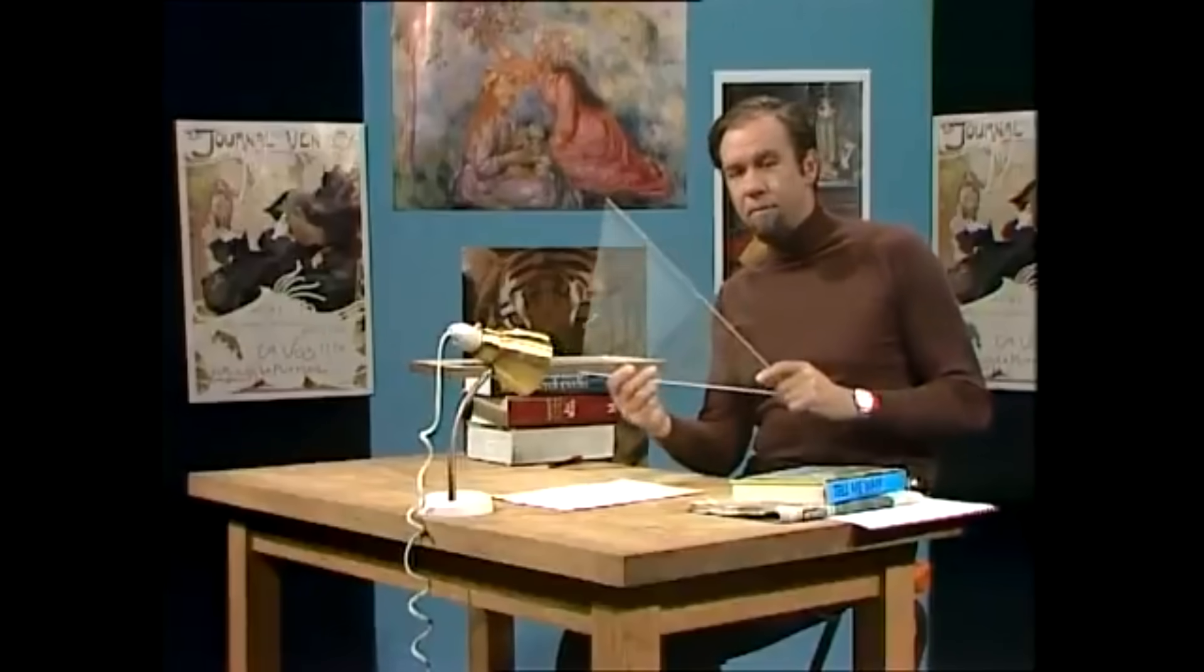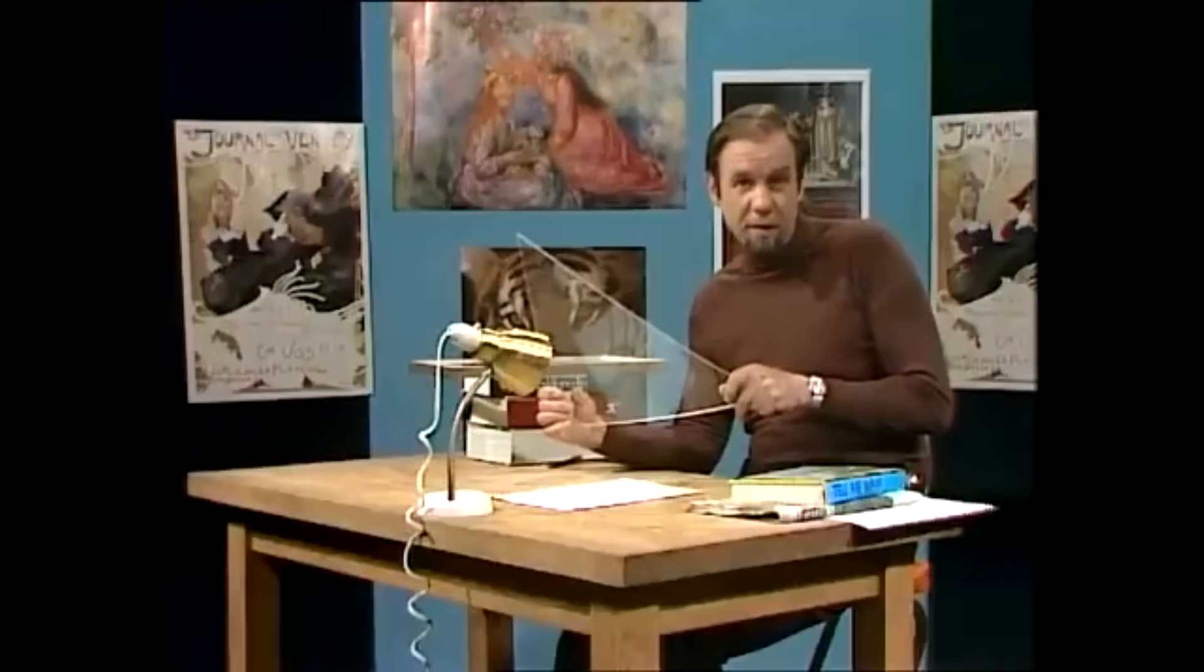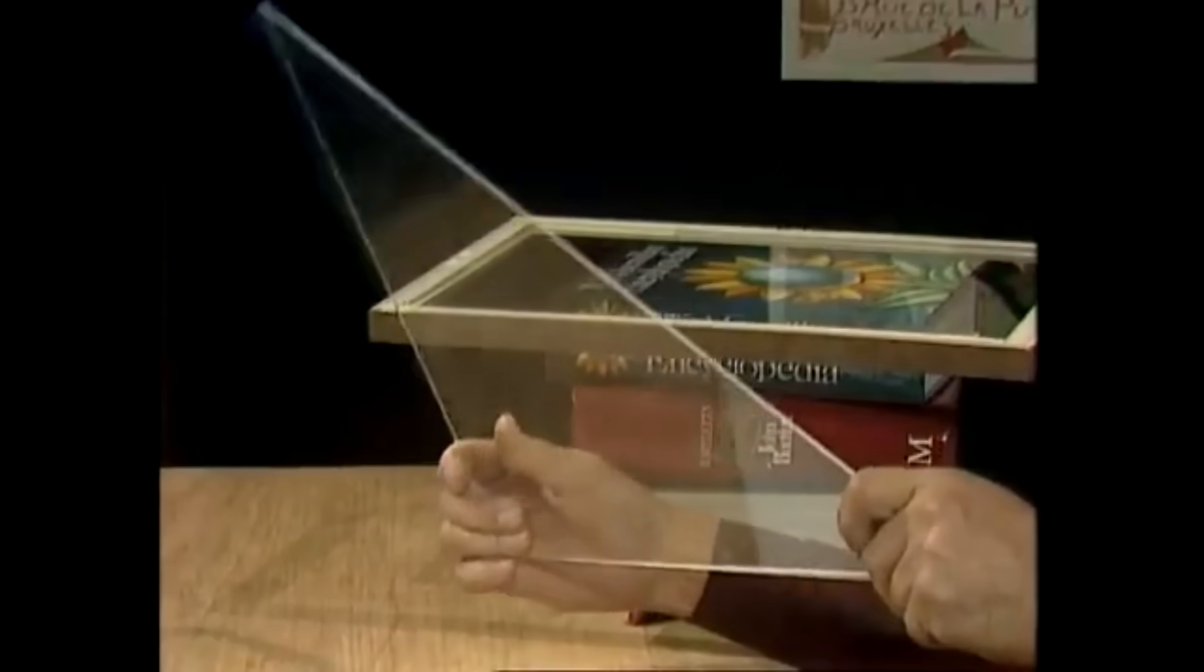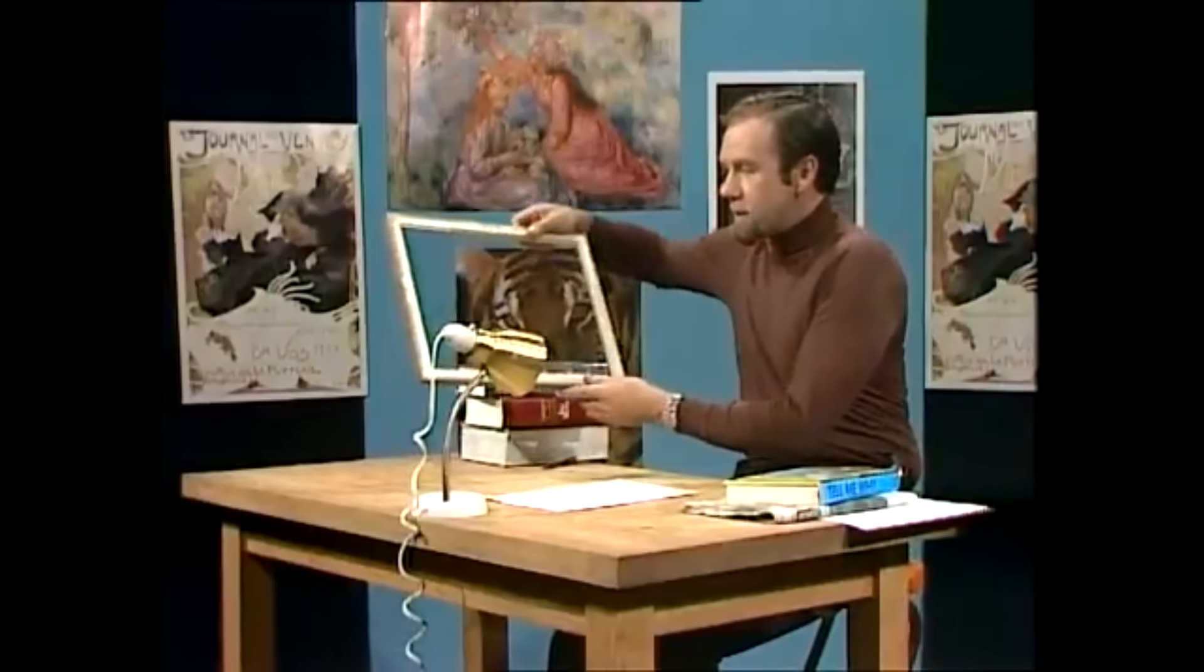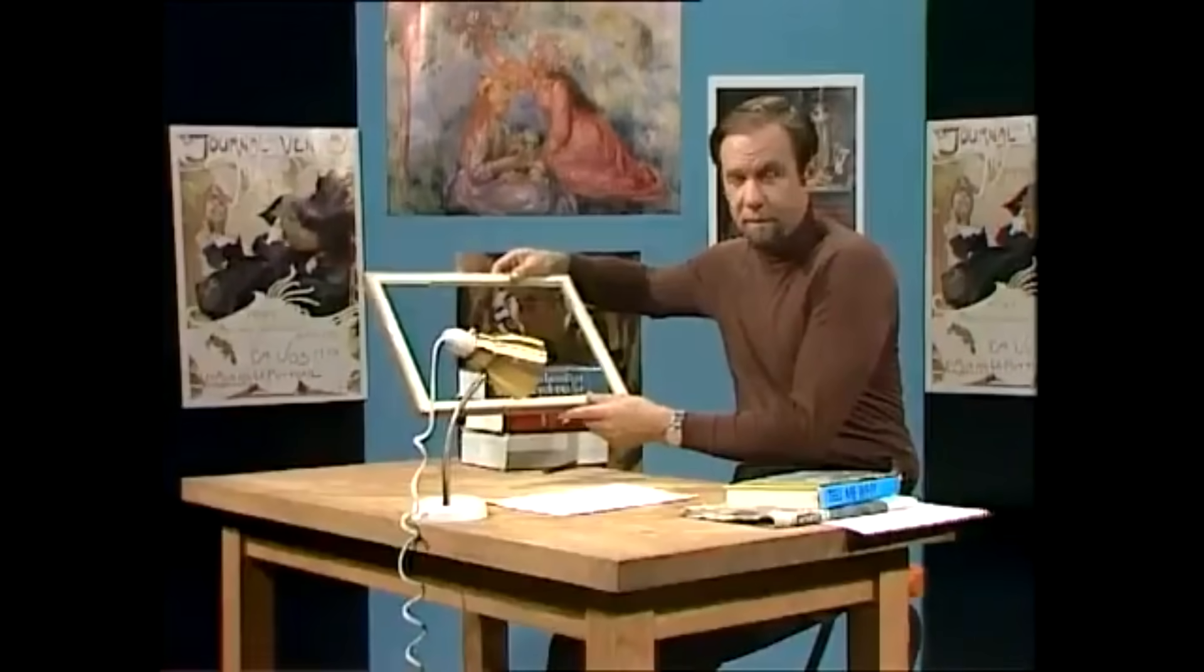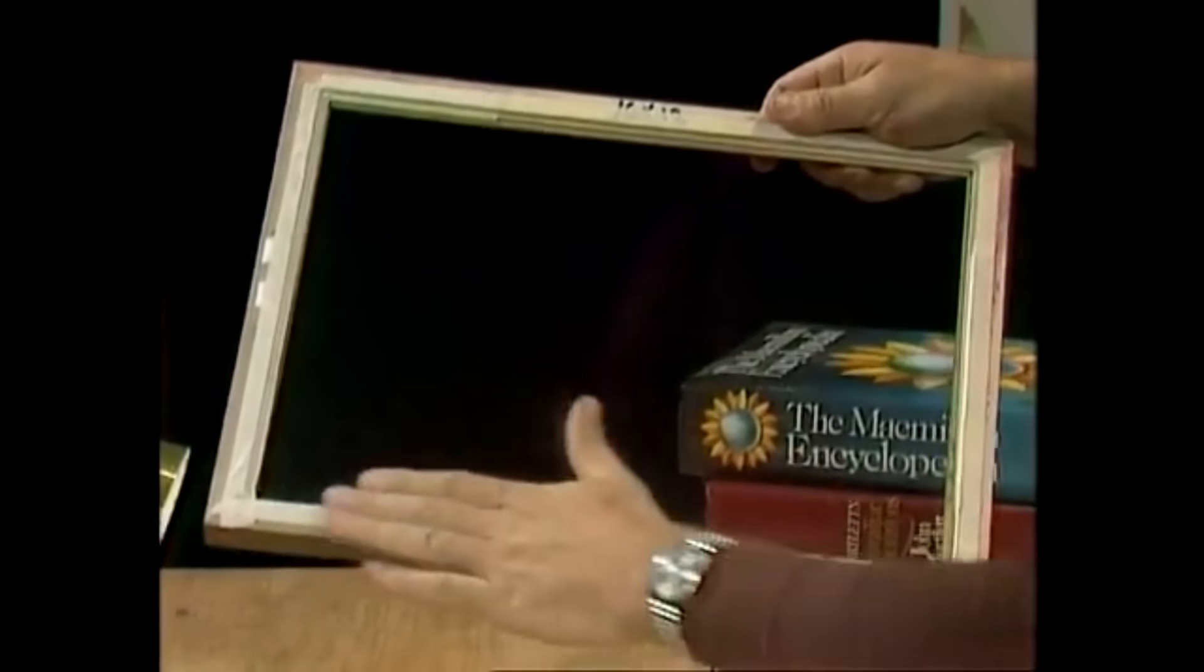An off-cut piece of perspex is good because it's safe—it doesn't break and shatter—but it's expensive and sometimes hard to get. So probably the most likely thing you'll find is an old picture frame with the glass still in it. That's a very good thing to get because it's pretty safe; you can't catch yourself on the edge.